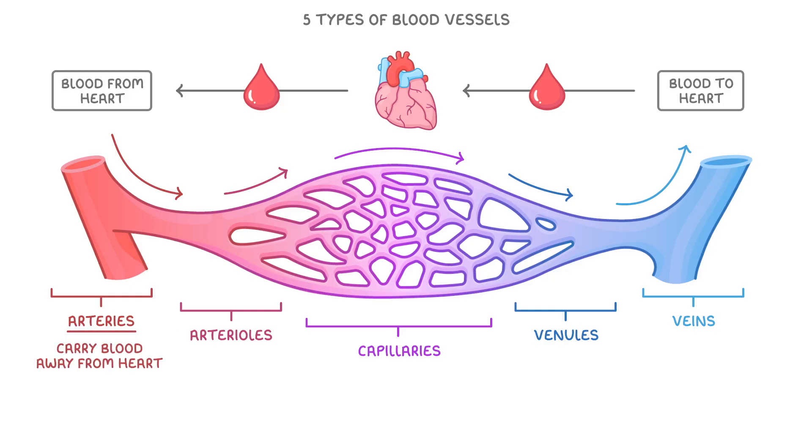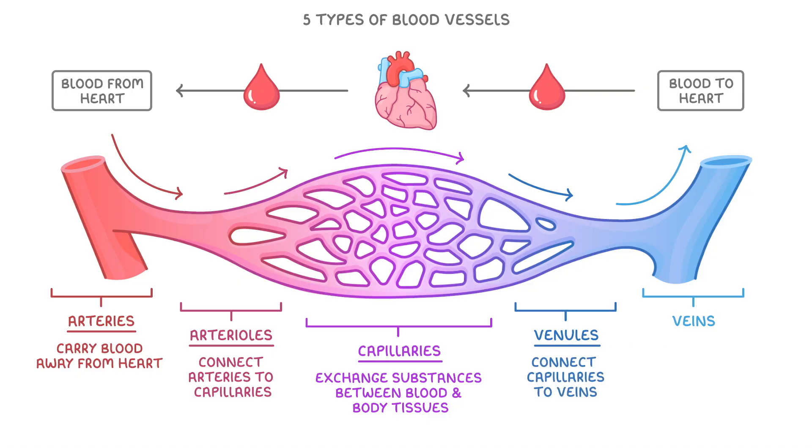Arteries carry blood away from the heart. Arterioles then connect the arteries to capillaries. Capillaries exchange substances between the blood and body tissues. Venules connect capillaries to veins, and veins then carry blood back to the heart.